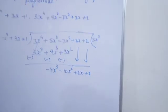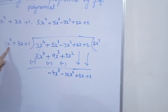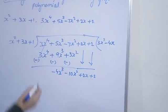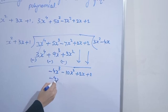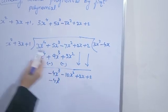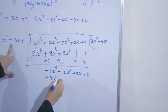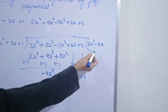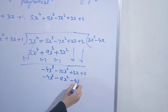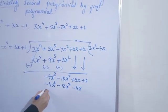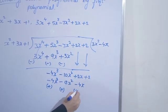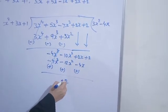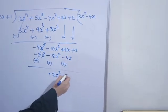Minus 4x³, yahaan par 2 bhi minus se plus karenge lekin jo bada sign hai uska dalenge, to as it is carry karenge. Plus 2. Ab next hume minus 4x³ chahiye, yahaan x² hai to minus 4x rakhenge, x³ aa jayega. Multiply: plus into minus = minus 4x into x² = x³. Second term: minus into plus = minus 4 into 3 = 12x into x = x². Minus into plus = minus 4 into 1 = 4x. Sign change karenge. First term cancel. Plus 12 minus 10, bada number ka sign lenge: plus 2x² plus 6x.